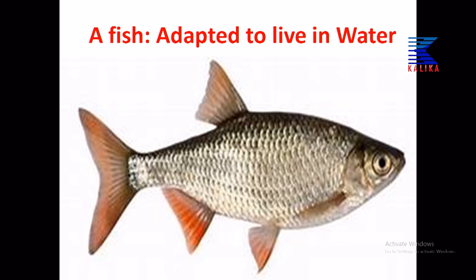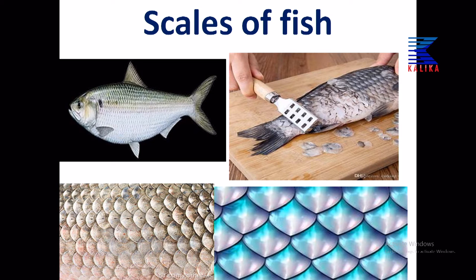A fish adapted to live in water shows a very high degree of aquatic adaptation. It has scales covering the body and fins meant for swimming. The dorsal fin is unpaired, the caudal fin is unpaired, and other fins are paired. The scales act like a waterproof jacket — preventing water from entering the body and preventing decay of the muscles.